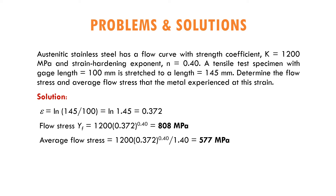Now let us look at the second problem. Austenitic steel has a flow curve with strength coefficient k equal to 1,200 MPa and strain hardening exponent n equal to 0.4. A tensile test specimen with gauge length 100 mm is stretched to a length of 145 mm. We need to determine the flow stress and average flow stress. Since epsilon is not given, we have to calculate it.